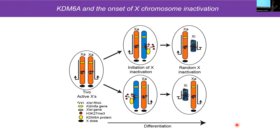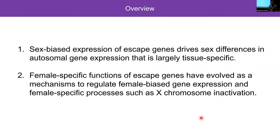A simplified model of what I think is going on: in mouse ES cells you have two active X chromosomes. Once differentiation starts, KDM6A comes in, removes the repressive H3K27 trimethylation mark, XIST is turned on and expressed, coating the chromosome — and you get this condensed chromosome enriched in H3K27 trimethylation. This can occur on either maternal or paternal allele. Overall, I've shown that sex-biased expression of escape genes can drive sex differences in autosomal gene expression — largely tissue-specific — and that female-specific functions of escape genes may have evolved as mechanisms to regulate female-biased expression and female-specific processes such as X chromosome inactivation itself.